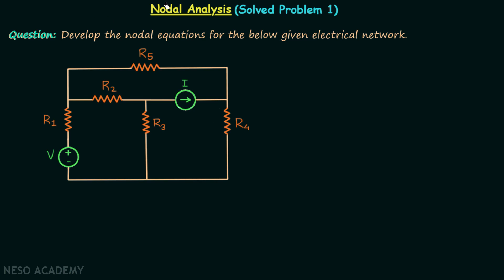We are done with the basics of nodal analysis and now we are going to solve problem number one on nodal analysis. According to this problem we are required to develop the nodal equations for the given electrical network. You can see the network on your screen. We have 1, 2, 3, 4, and 5 resistors in the network and there are two independent sources: an independent voltage source providing V volts and an independent current source providing I amperes of current.